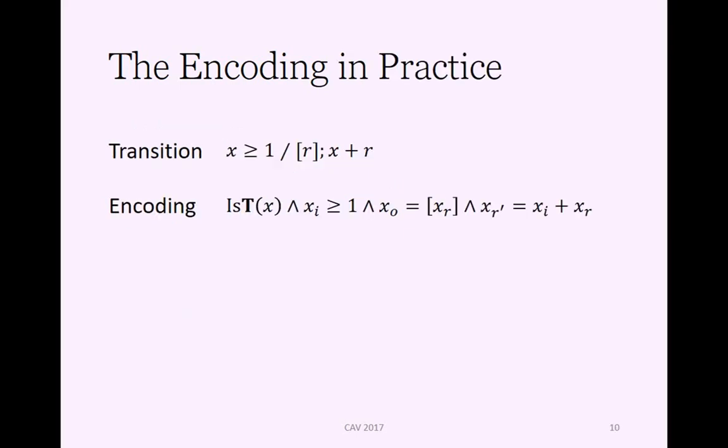If you look at the encoding of a single transition, here we have an example which checks that the current input is greater than or equal to one, then it outputs the current register value, and then it increments the input into the register. The encoding will be a conjunction of different parts. First it checks that the input in the automaton is of the correct tuple type, so this is representing a normal transition.